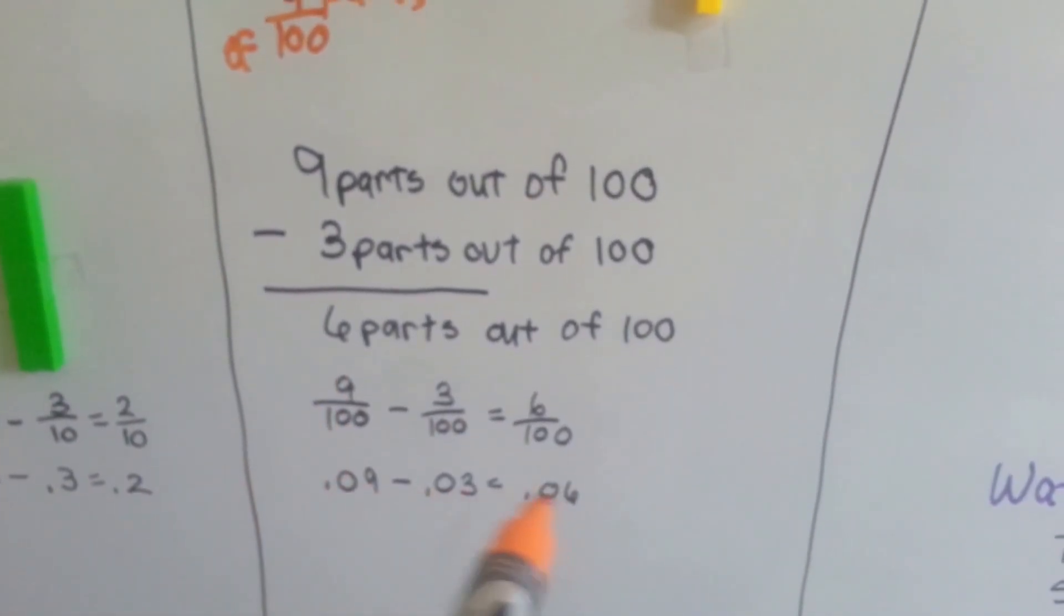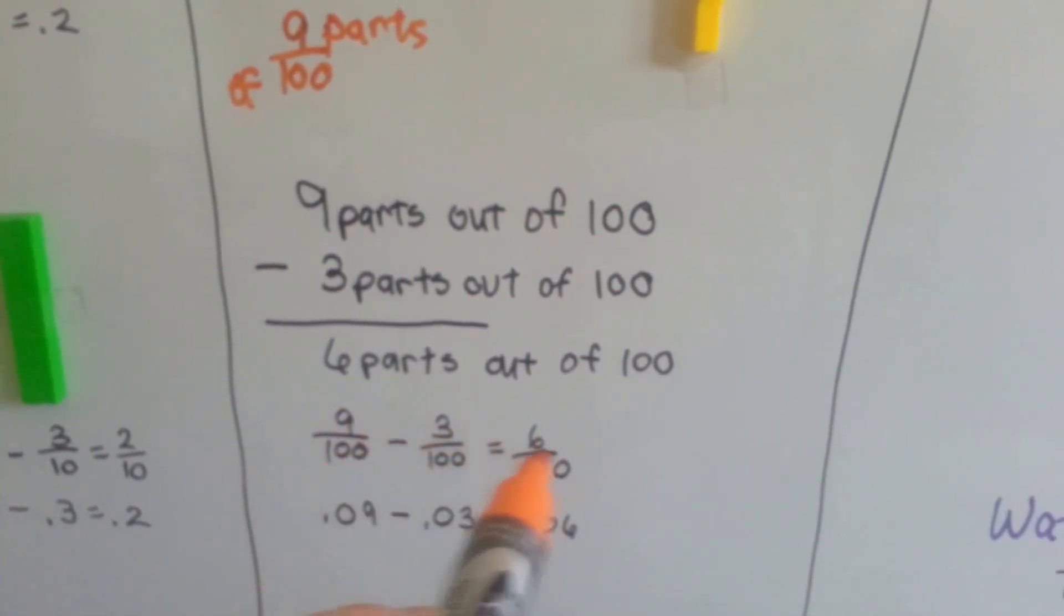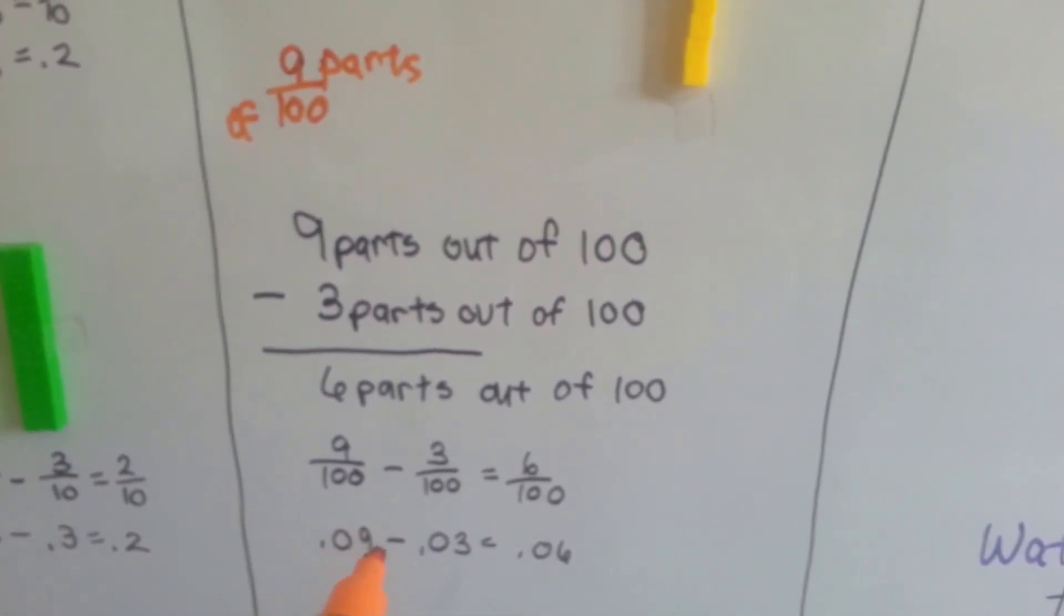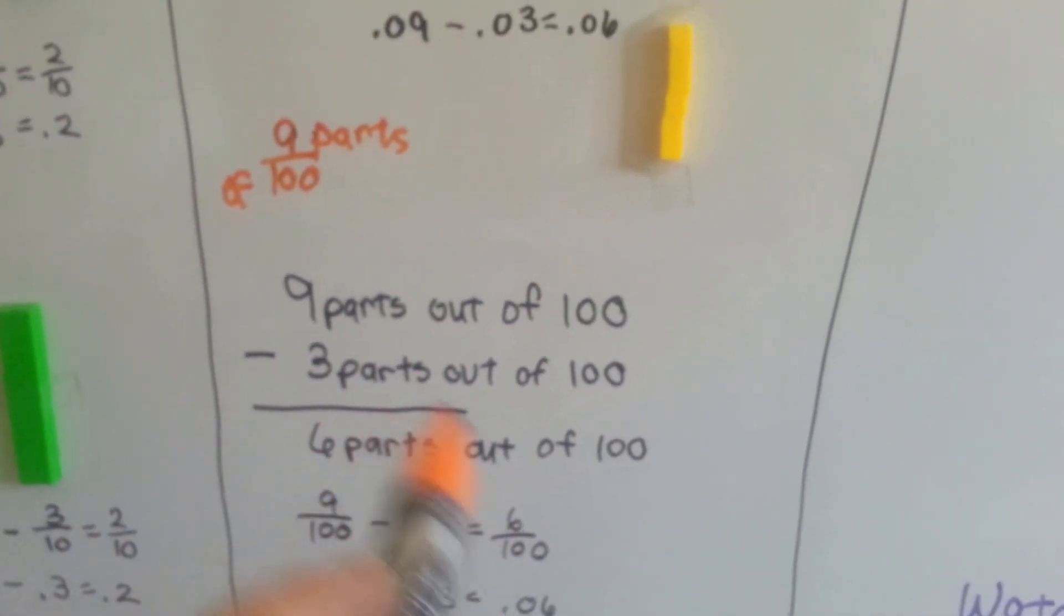So that's how, when we're subtracting decimals, which is like subtracting fractions, we can go from nine one-hundredths to six one-hundredths or three one-hundredths. Because we're taking the parts away.